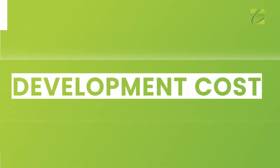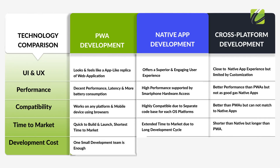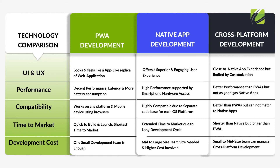The fifth parameter is development cost. In progressive web app development, a small development team is enough. In the native approach, separate development teams for each platform are required. In cross-platform, one small to mid-sized development team is needed, as the effort is more than progressive app development. Development cost for the native approach is the highest, followed by cross-platform, then progressive web app.